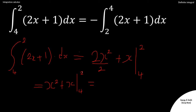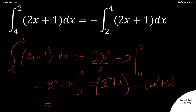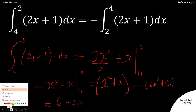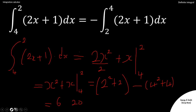We substitute the upper limit first: two squared plus two. Then minus the lower limit: four squared plus four. Simplifying, two squared gives four, four plus two is six. Four squared gives sixteen, sixteen plus four is twenty. So we have six minus twenty, which gives us minus sixteen for the left hand side.